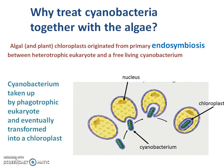What is endosymbiosis? Endosymbiosis is: in the process of evolution, algae chloroplasts originated from primary endosymbiosis between heterotrophic eukaryotes and free-living cyanobacteria.